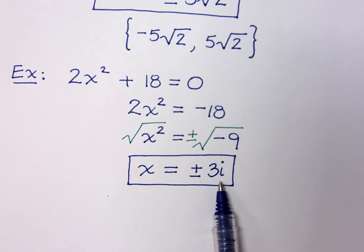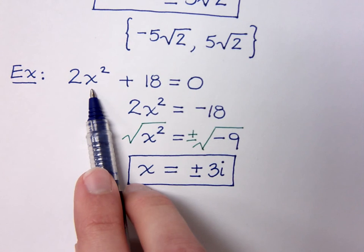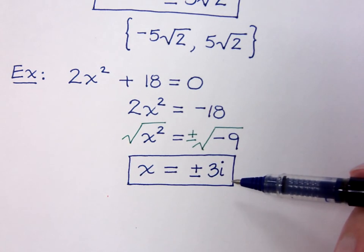But if you plug in the i, and you square that, you're going to get negatives. And so that's going to be able to balance things out and get back to your 0. So, watch out for this. We can have imaginary solutions.